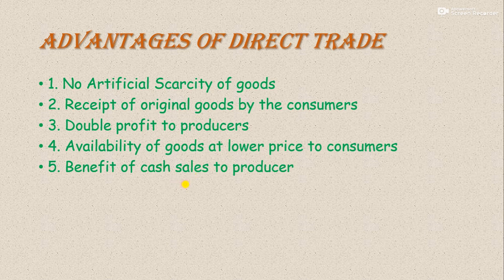Last advantage: benefit of cash sales to producers. Producer always cash sales karte hain; credit sales facilities provide nahi karte, kyunki producer aur consumer ke beech mein bahut zyada gap hota hai, aur us gap ko minimize nahi kiya ja sakta. Producer always cash sales provide karte hain, jisse producers ko working capital ke liye finance ek dam se collect ho jaata hai. Unke paas koi risk nahi rehta ki unki goods ki money aayegi ya nahi — woh cash sales kar rahe hain. These are the main advantages of direct trade.